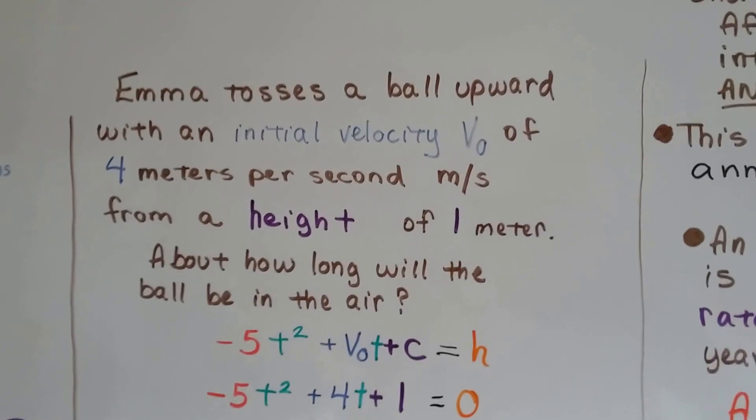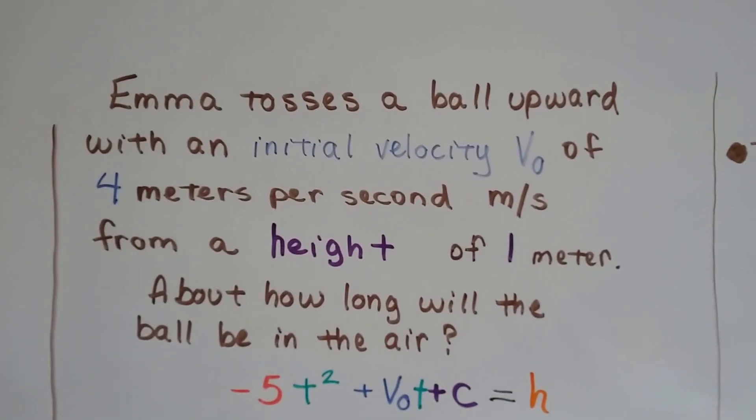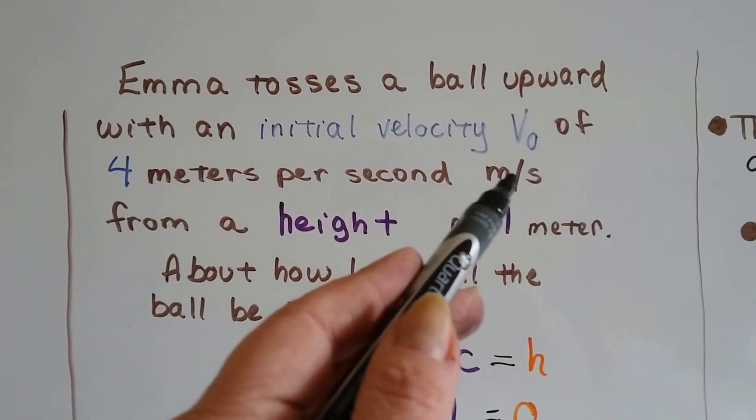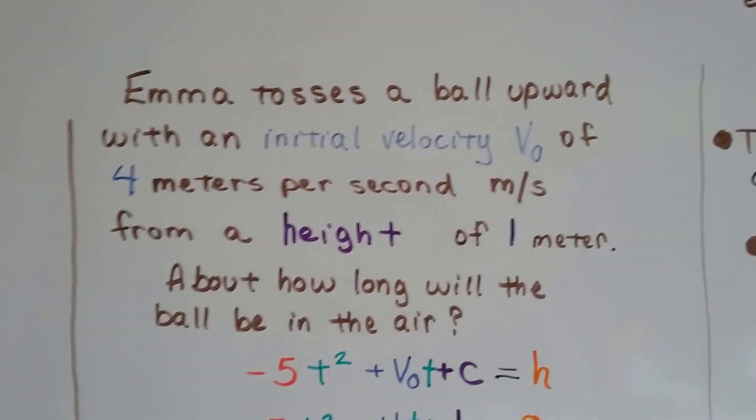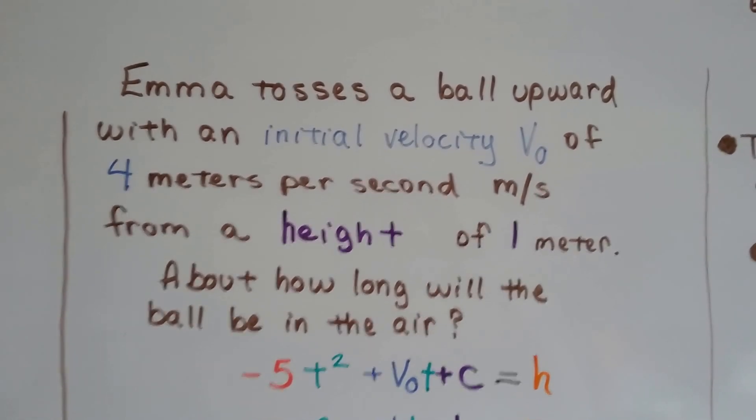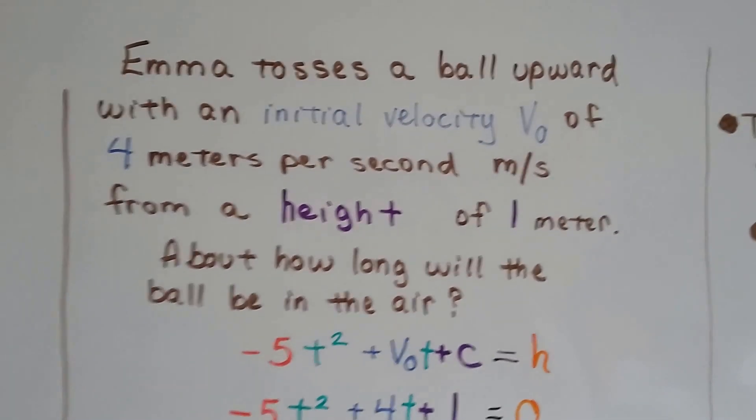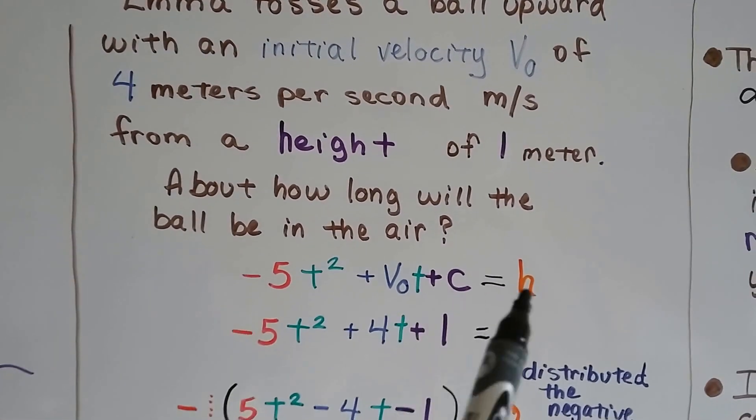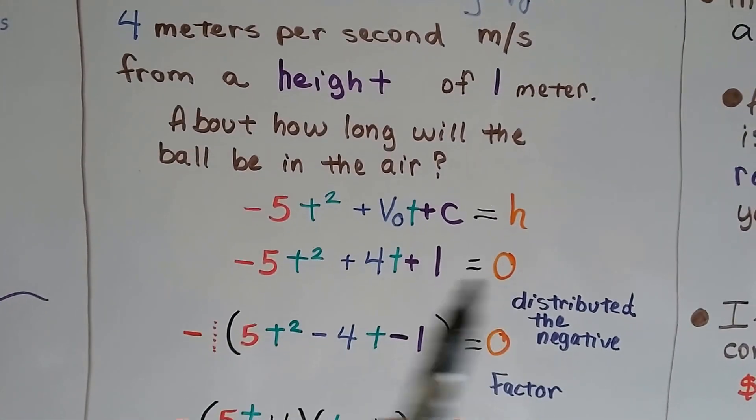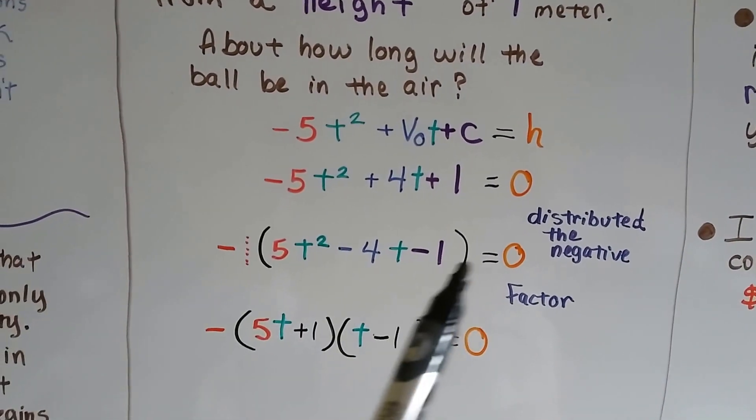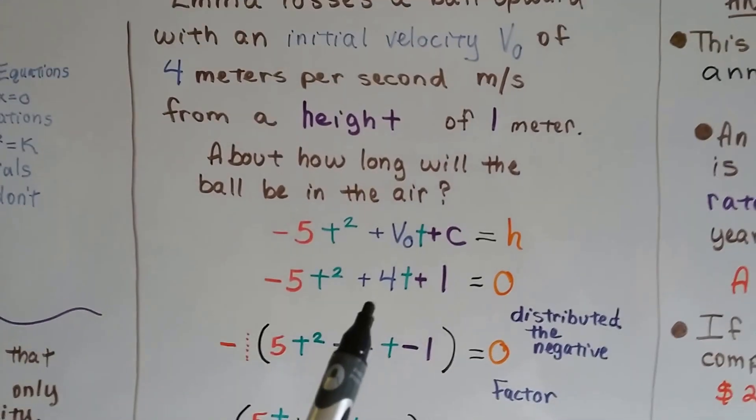Emma tosses a ball upward with an initial velocity v zero of 4 meters per second from a height of 1 meter. Emma's short. She's only a meter tall. How long will the ball be in the air? Here's our formula. We're going to set it to zero. And we're going to plug in all the values.